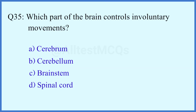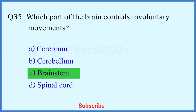Question number 35. Which part of the brain controls involuntary movement? The right answer is option C: Brain stem.